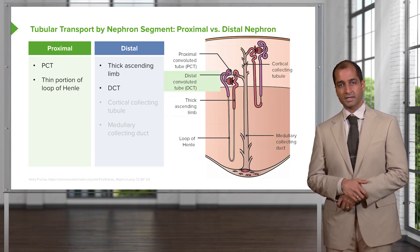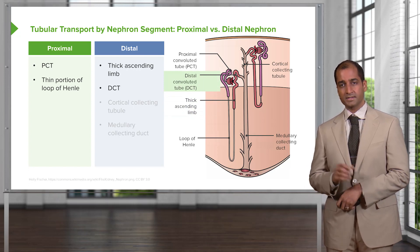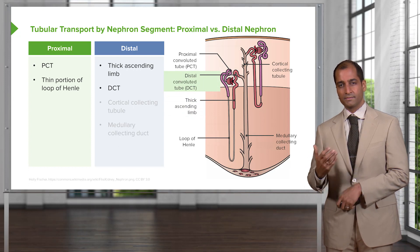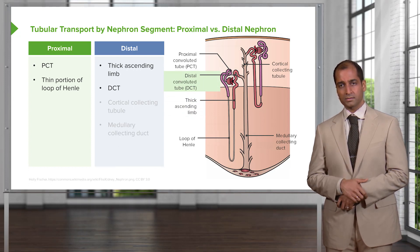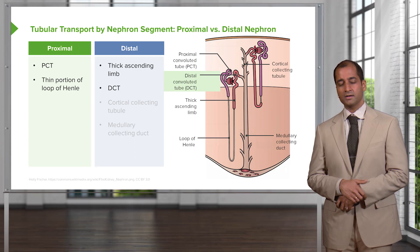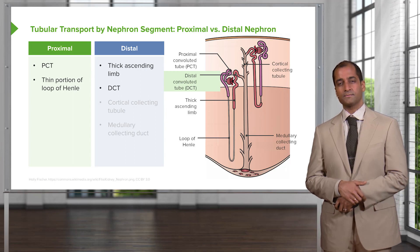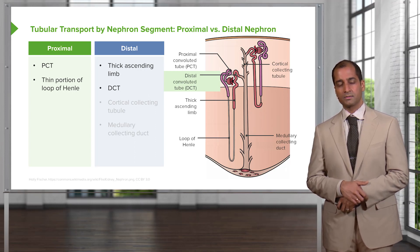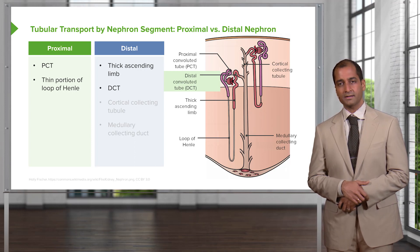DCT — distal convoluted tubule — and the cortical collecting tubule. The DCT has a thiazide-sensitive transporter removing sodium, about 25% or so, and also your chloride. It is also responsible for PTH receptors, reabsorbing your calcium.